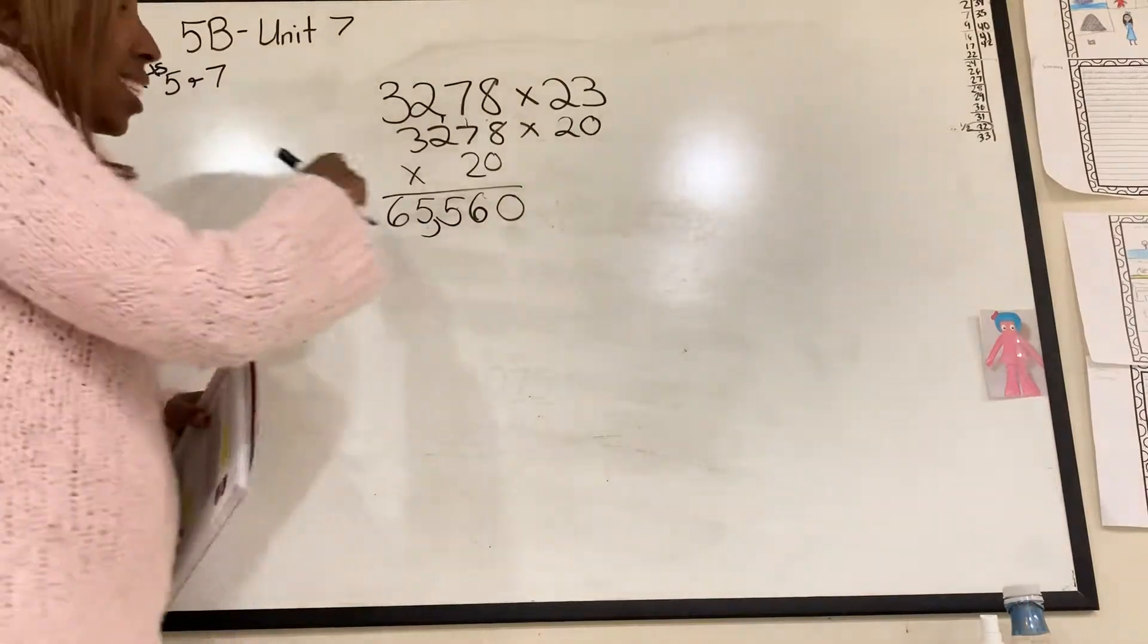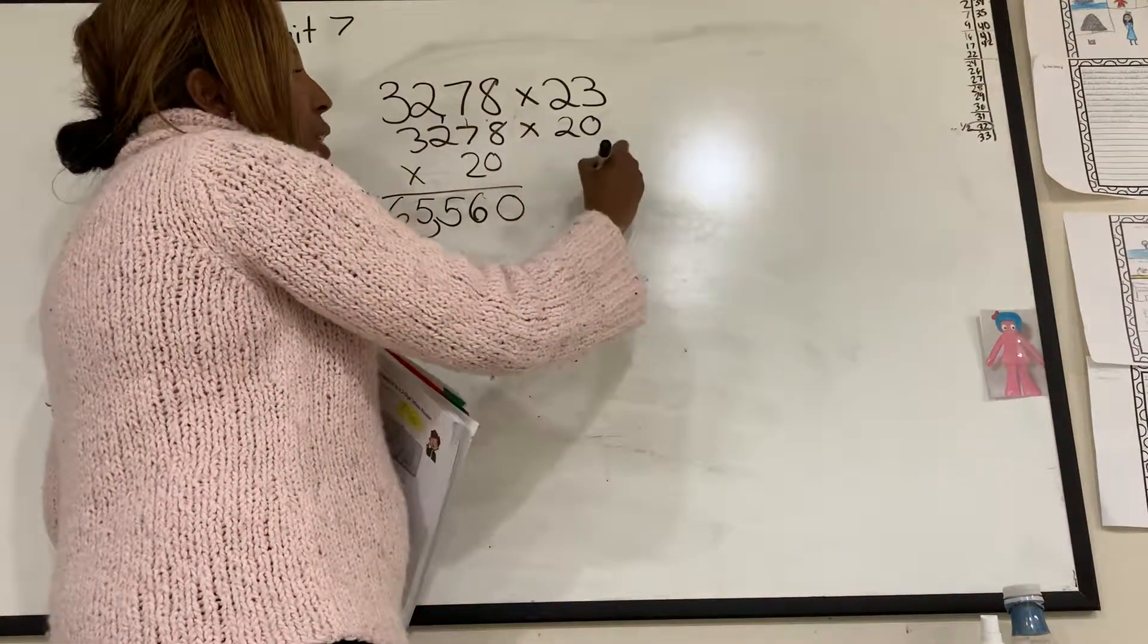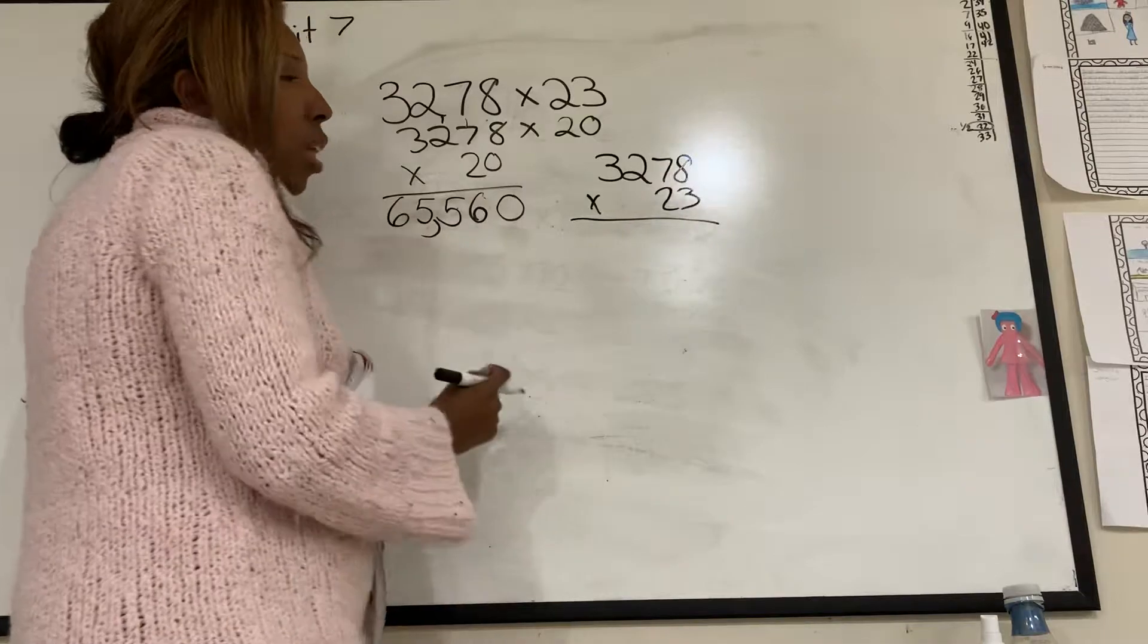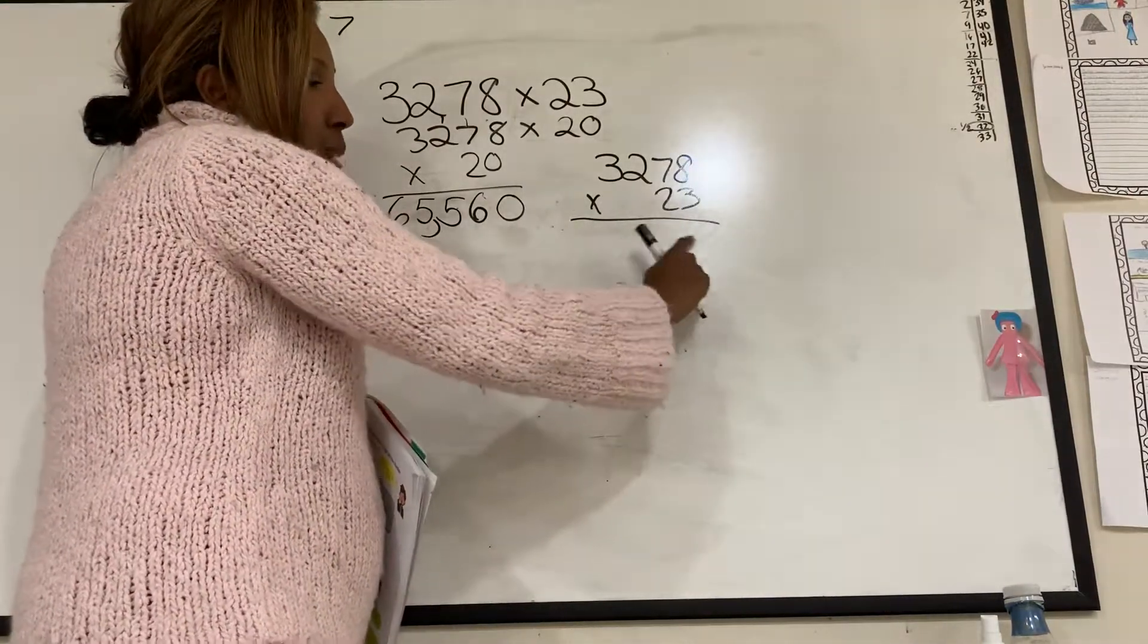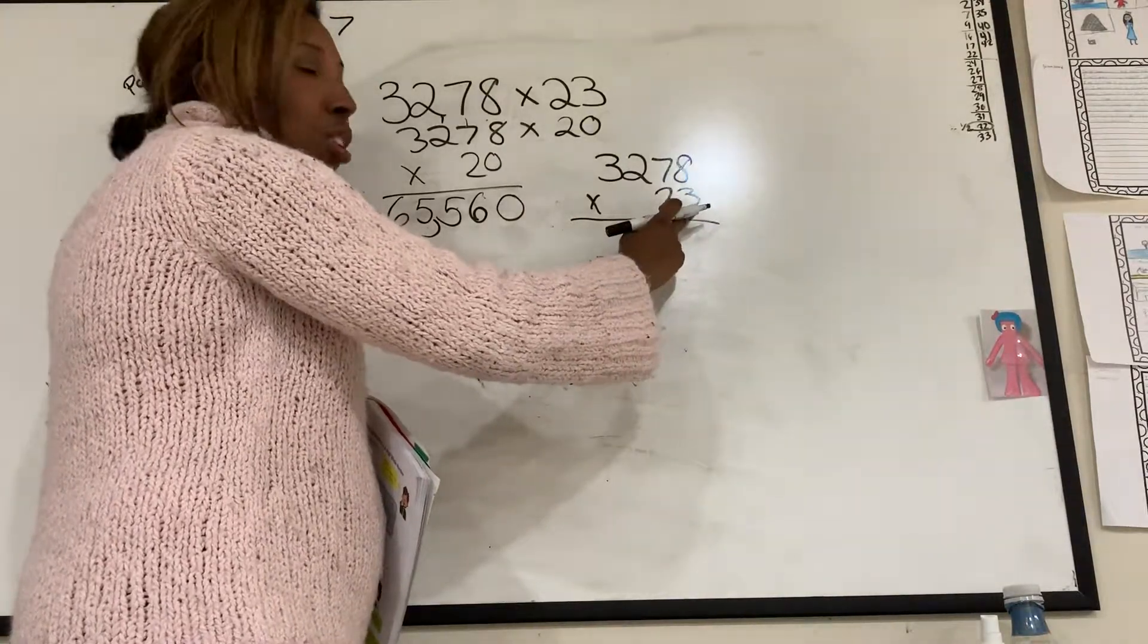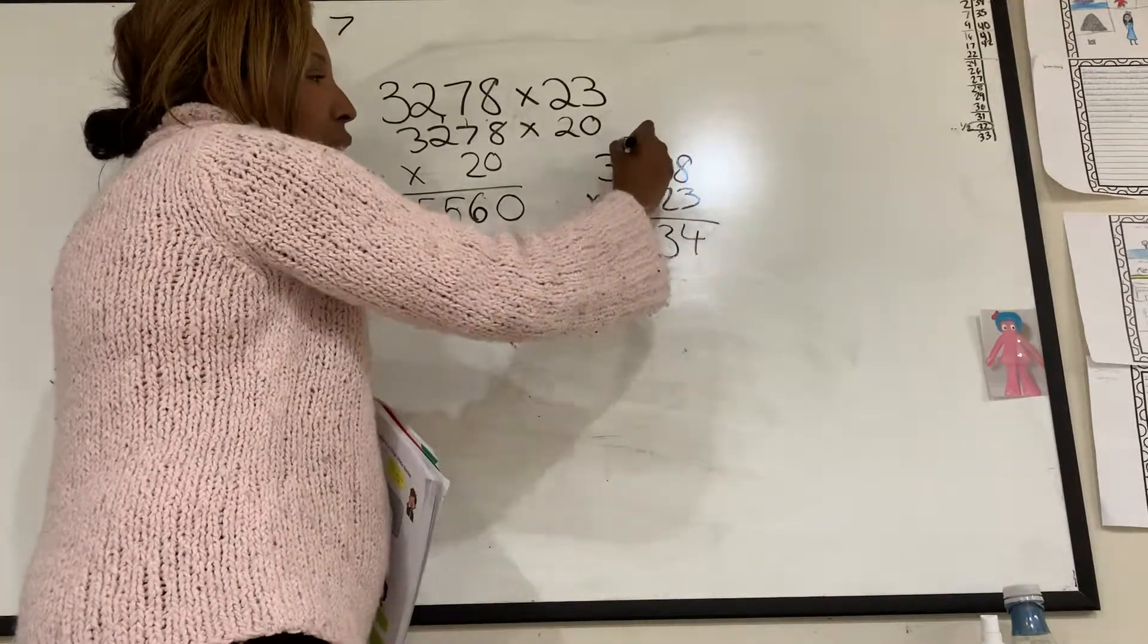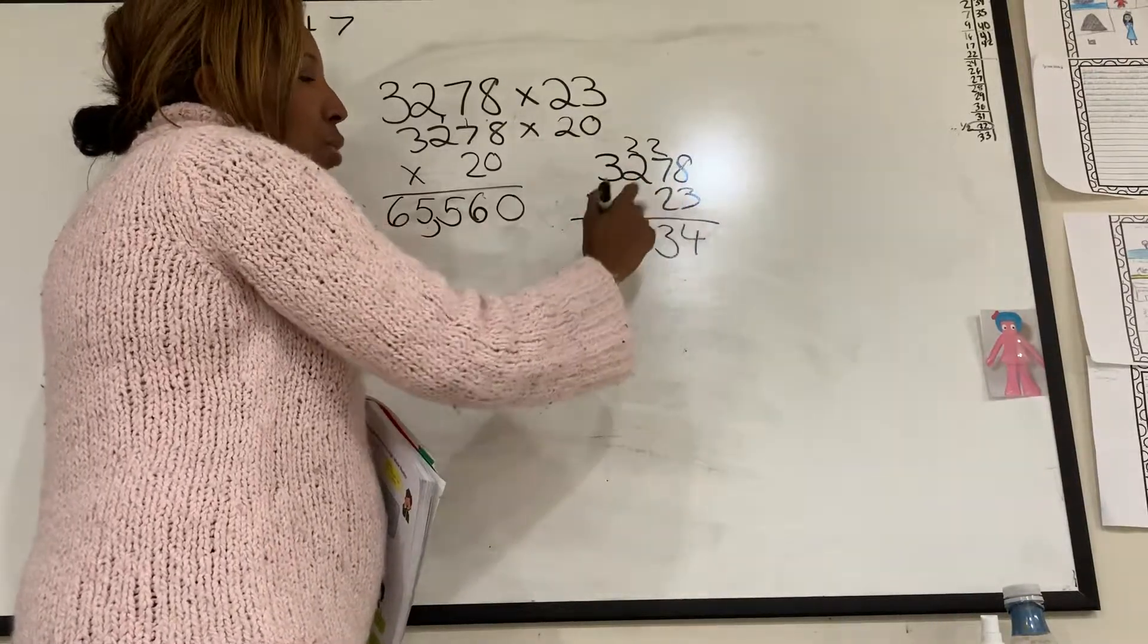But remember, I estimated. Now let's look at my actual answer. I had 3,278 times 23. Okay, well I know. Now I do it a little backwards, so kind of ignore me. I always start by it because sometimes I used to forget. So I always start a second. But I'm going to try for you to do it on the first. 8 times 3 is 24, carry the 2. 7 times 3 is 21, plus 2 is 23, carry the 2. 3 times 2 is 6, plus 2 is 8. And 3 times 3 is 9.